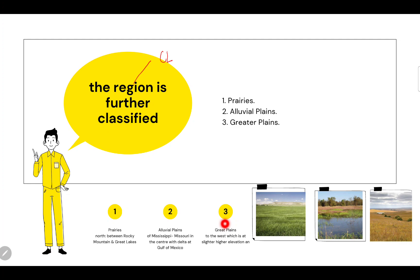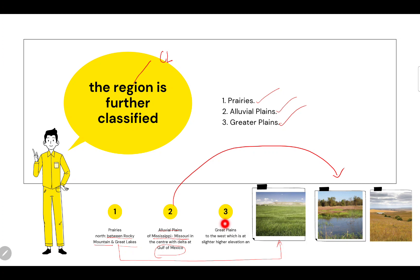The central lowland is further classified into three parts. Number one: prairies, which lie between the Rocky Mountains and the Great Lakes. Number two: alluvial plains of the Mississippi and Missouri in the center, with a delta at the Gulf of Mexico. Number three: great plains to the west, at slightly higher elevation. Images show all three respectively.